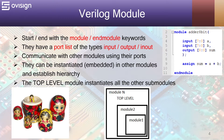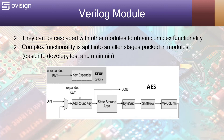Modules communicate with other modules using their ports. They can be instantiated or embedded in other modules and establish a hierarchy. The top-level module instantiates all the other sub-modules. We can make a simple analogy with a Russian doll, and the largest doll is the top-level module — all the other smaller dolls are the sub-modules. Modules can be cascaded with other modules to obtain complex functionality, which is split into smaller stages and packed in modules. This is easier to develop, test, and maintain.